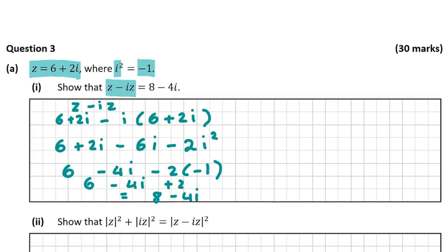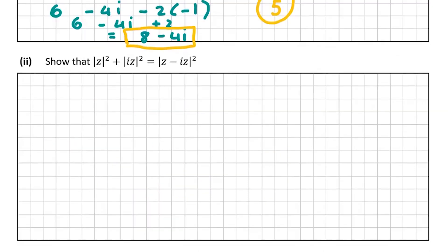I'll draw a small box around that answer — the marks for this question are 5. Now let's move on to part 2, which deals with moduluses. We're asked to show that the modulus of z squared plus the modulus of iz squared equals the modulus of z minus iz squared.